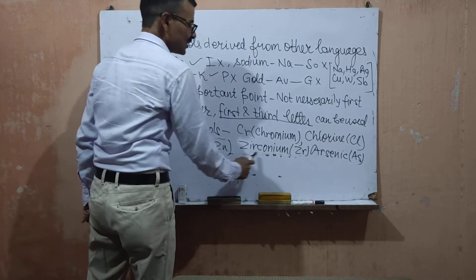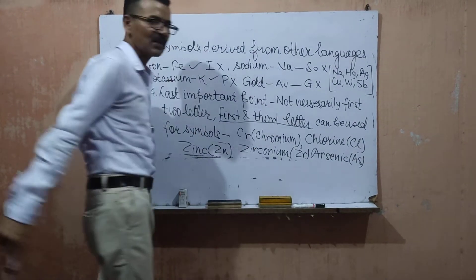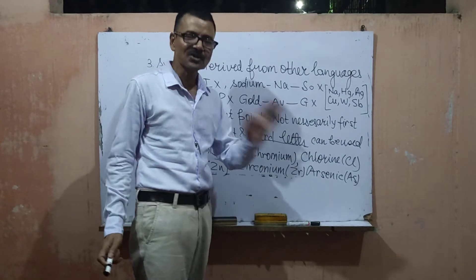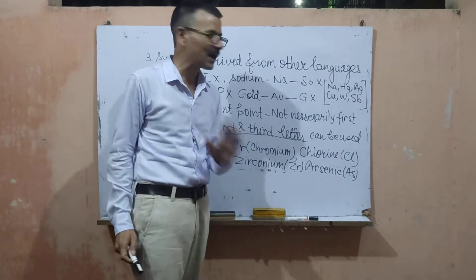Zinc, Zn is the symbol. Zirconium, Zr is the symbol. And arsenic, where mistakes are very common, Ar is not the symbol. Ar is the symbol of argon. As is the symbol for arsenic.